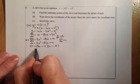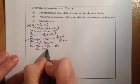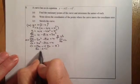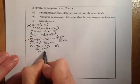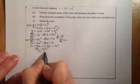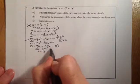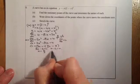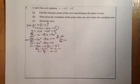From 3x minus 2 equals 0, x is equal to 2/3. From x minus 2 equals 0, x is equal to 2. So there are my two x-coordinates for the stationary points.